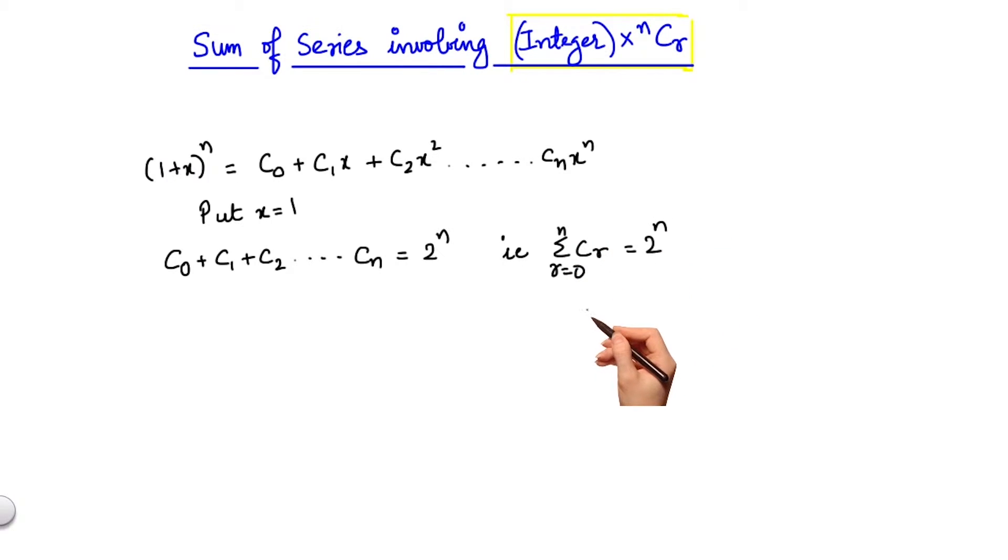But what if I want to sum the series 1 times nc1 plus 2 times nc2 plus 3 times nc3 and so on until n times ncn? Or in other words, the sum of the series summation rcr, r varying from 1 to n. We will be dealing with such summations in this section.